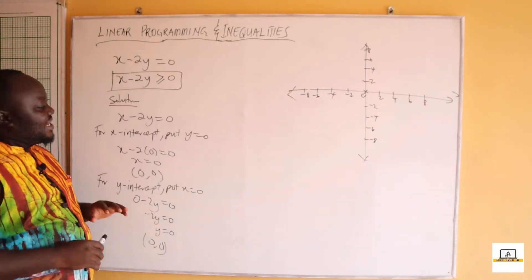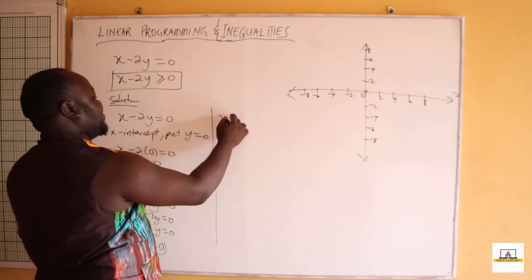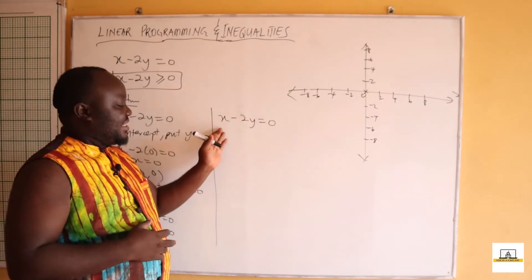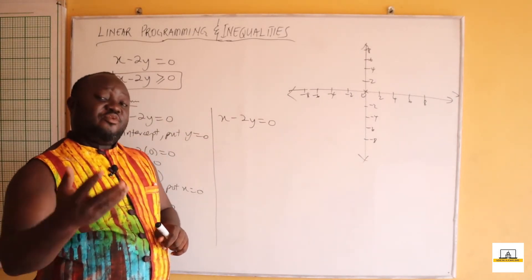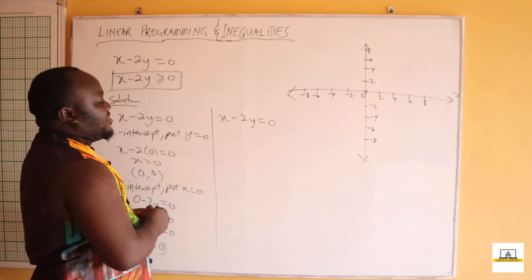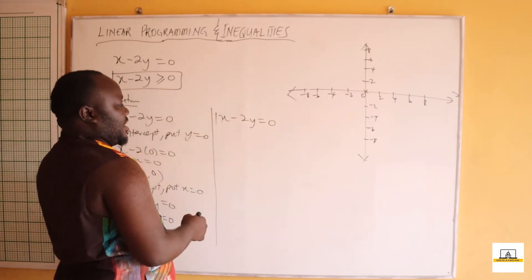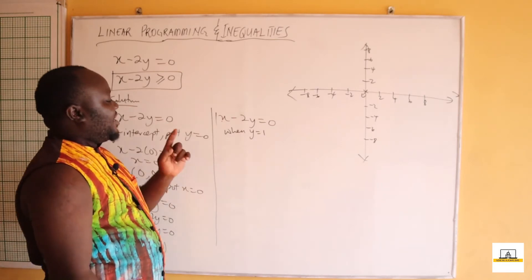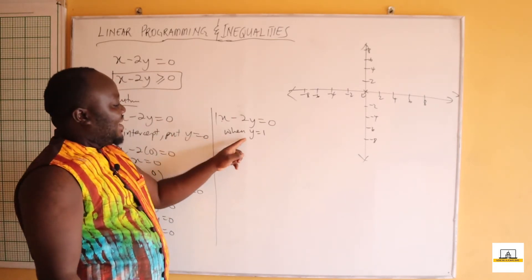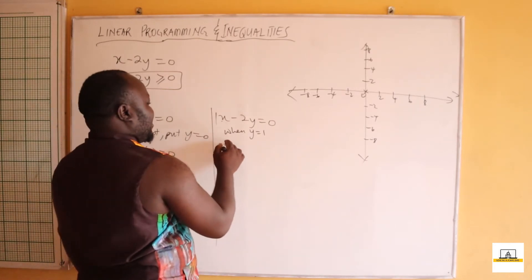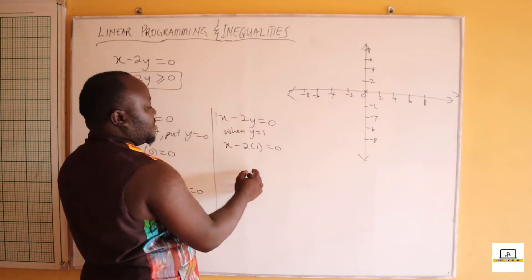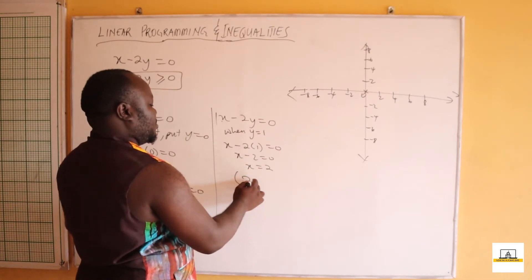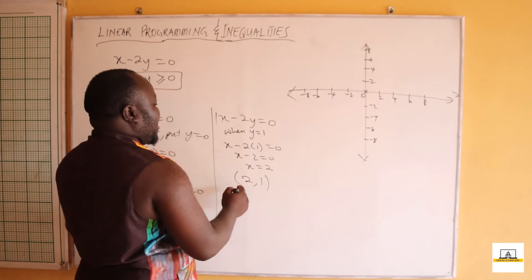To find another point, take x minus 2y equals zero. One method is to assign the coefficient of x to y. The coefficient of x is 1, so let y equal 1. Then x minus 2 times 1 equals zero, giving x minus 2 equals zero, so x equals 2. This gives us the point (2, 1).